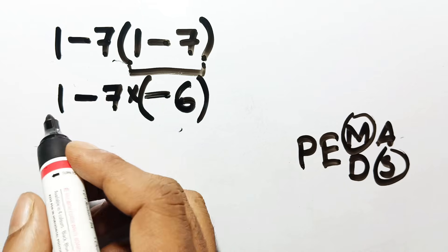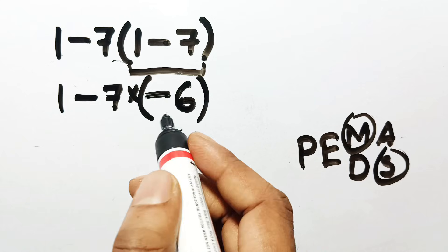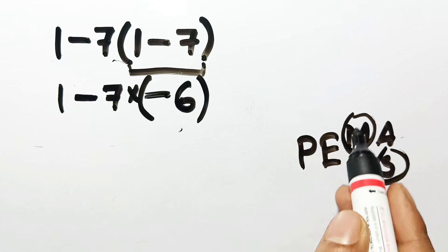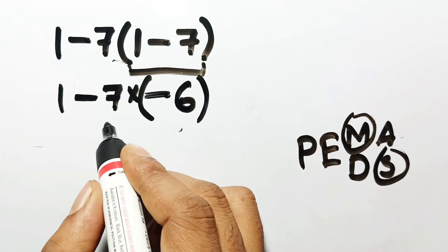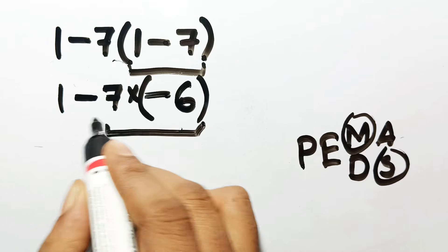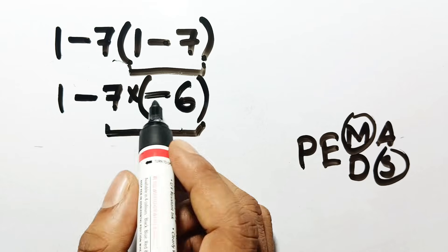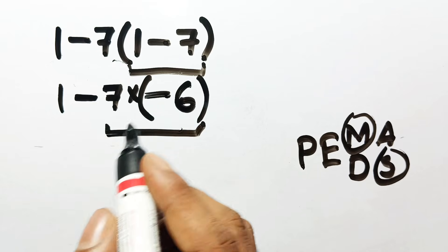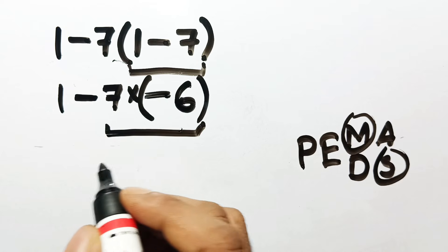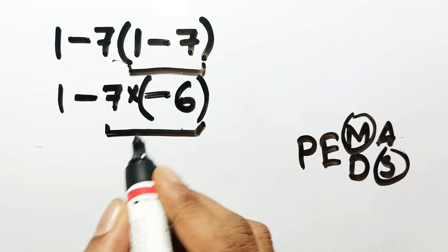The 7 is attached to the parentheses by multiplication, so we must multiply next. We are multiplying negative 7 by negative 6. Remember your integer rules: a negative times a negative equals a positive. 7 times 6 is 42.